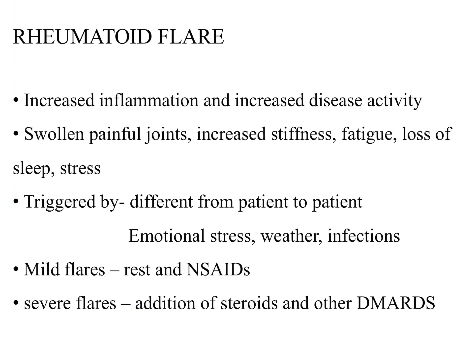Rheumatoid flare is a sudden increase in inflammation and joint activity, presenting with painful swollen joints, increased stiffness, fatigue, loss of sleep, and stress. Triggering factors vary by patient — emotional stress, weather, or infection. Mild flares can be treated with rest and starting NSAIDs. For severe flares, we can add steroids and a DMARD, or change the DMARD depending on what the patient was already taking.